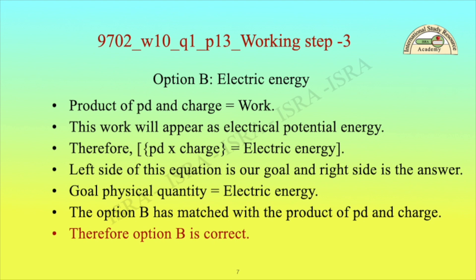Working step 3 — Option B, electric energy: The product of PD and charge equals work, which appears as electrical potential energy. Therefore PD × charge equals electric energy. The left side of this equation is our goal and the right side is the answer. Option B matches the product of PD and charge, therefore option B is correct.